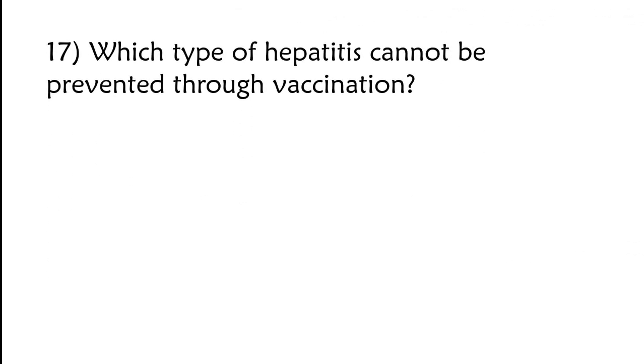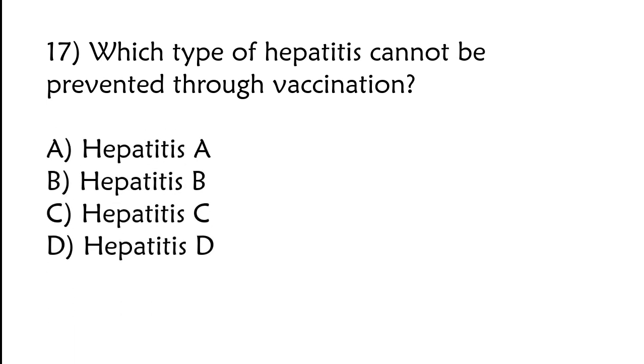Which type of hepatitis cannot be prevented through vaccination? Hepatitis A, hepatitis B, hepatitis C, or hepatitis D. The correct answer is option C, hepatitis C.